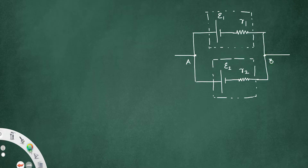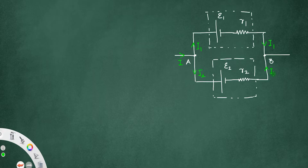Let us pass a current I into junction A. The current I will split into I1 and I2, so that I1 flows through the cell having EMF E1, and it will come back to junction B, from where they rejoin and flow as I itself.